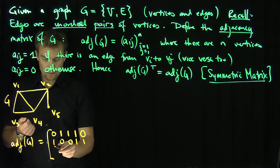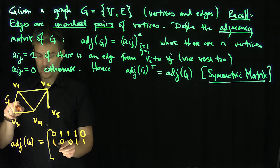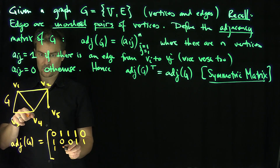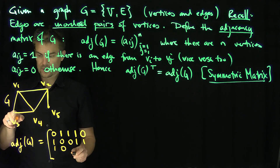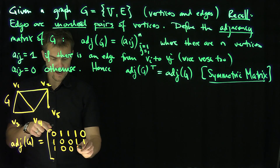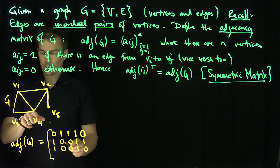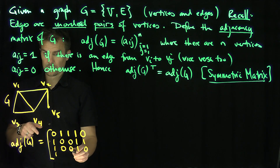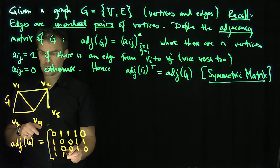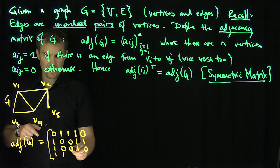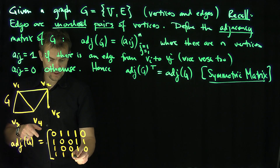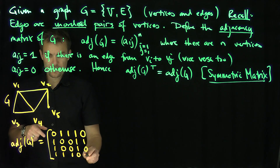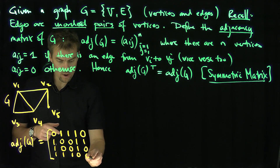Does 3 connect to itself? No. Does 3 connect to 1? Yes. Does 3 connect to 2? No. Is there an edge from 3 to 3? No, there's no loop there. Does 3 connect to 4? Yes. Does 3 connect to 5? No. Does 4 connect to 1? Yes. Does 4 connect to 2? Yes. Does 4 connect to 3? Yes. Does 4 connect to itself? No. Does 4 connect to 5? No.